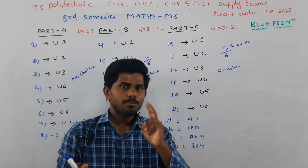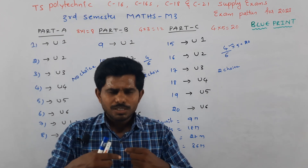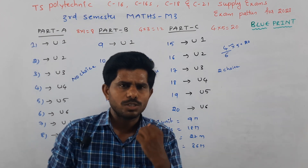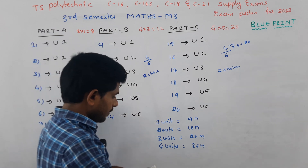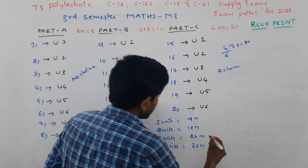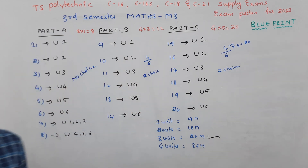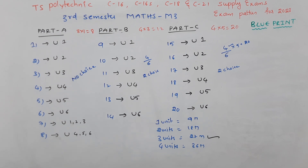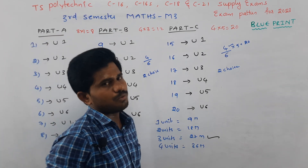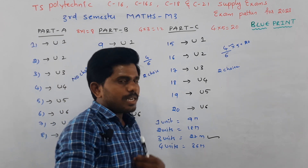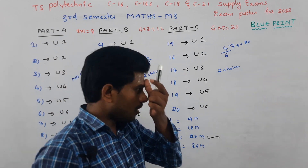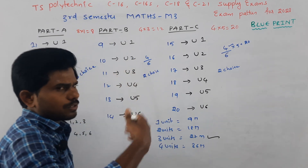In this case, you need to prepare at least 2 units perfectly. If you make a mistake, prepare 3 units to be safe. With 3 units prepared, even if you have doubts, you still have two options. There are 14 marks to pass, so even with minor mistakes, you can still score 13 marks and pass.